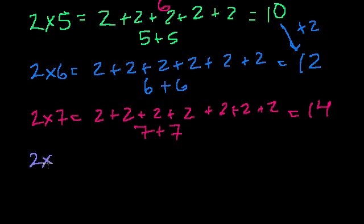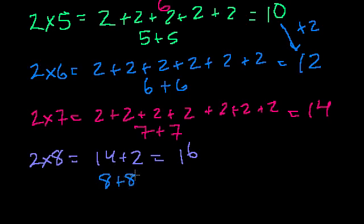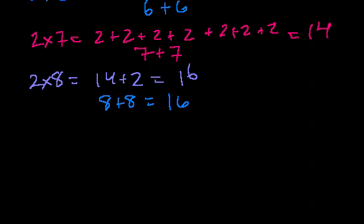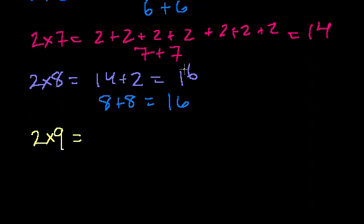2 times 8: it's just going to be 2 more than 2 times 7, so 14 plus 2 is 16. Or that's 8 plus 8, also 16. 2 times 9 is going to be 18 — that's 9 plus 9, also 18.